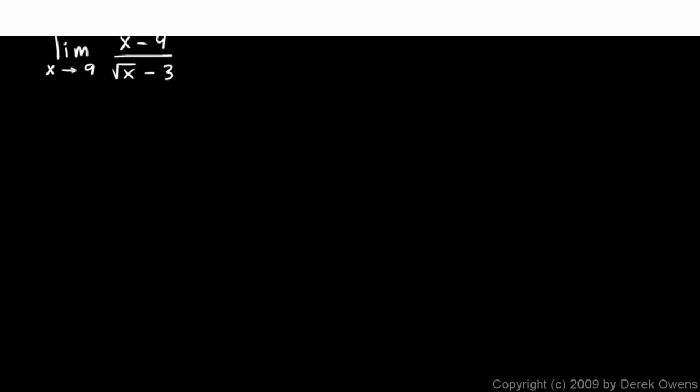Here's another example: the limit as x approaches 9 of x minus 9 over the square root of x minus 3. With just a little bit of thought, we can see that putting in a 9 here gives us a 0 numerator, and putting in a 9 there gives us 3 minus 3, a 0 denominator. So we have 0 over 0.